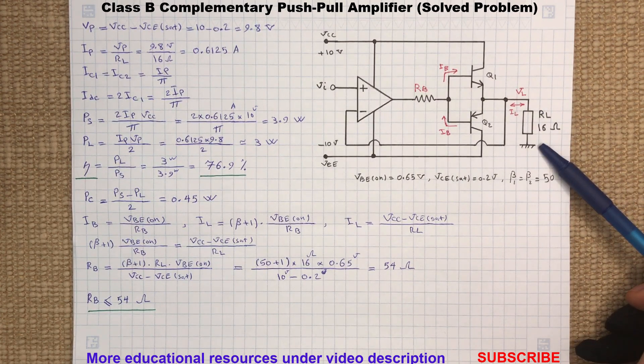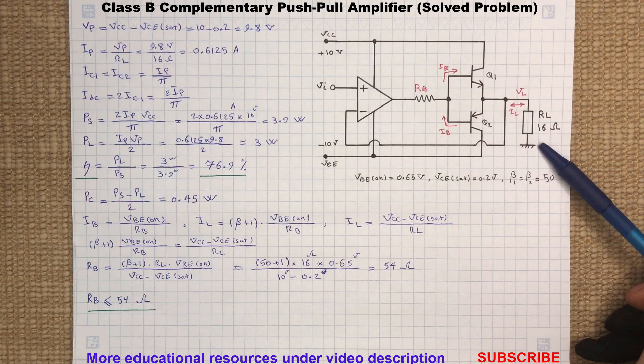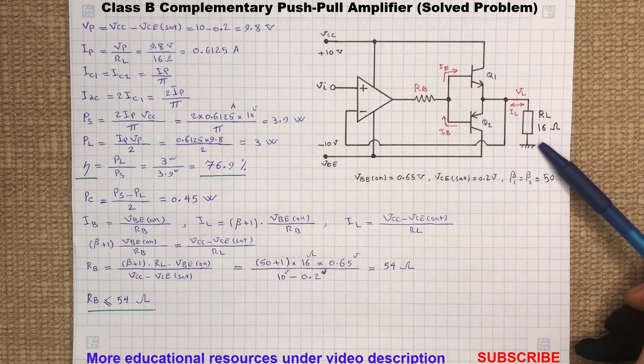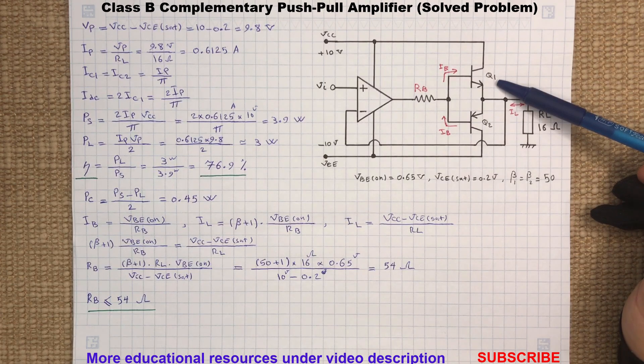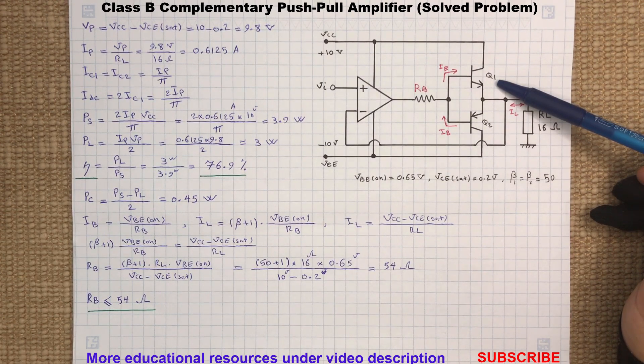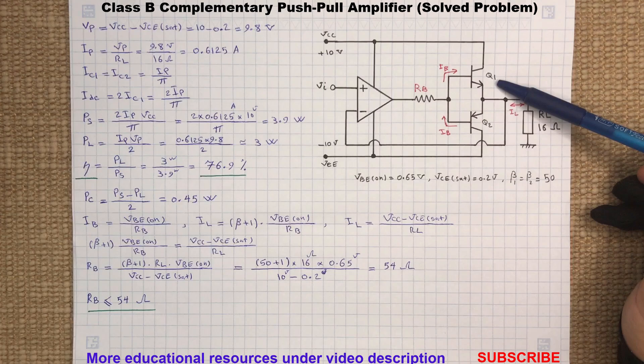Remember that the emitter follower amplifier has a voltage gain of one or less, but here the power amplifier goal is to provide a high current boost. For Vi smaller than zero, Q1, which is an NPN transistor, will remain off.